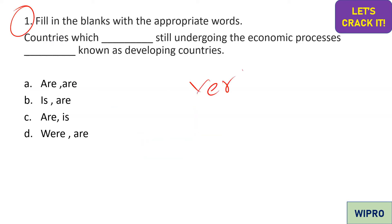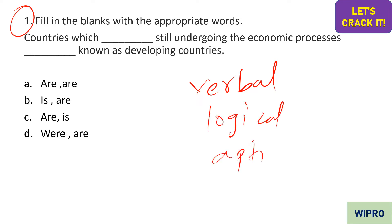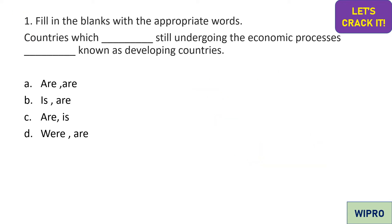We are going to discuss three kinds of questions: some verbal questions, some logical, and some aptitude questions. On the whole, we are going to solve at least 20 questions in this video. Moving on to the very first question: we need to fill the blank with the appropriate preposition — 'Countries which blank still undergoing the economic process.'